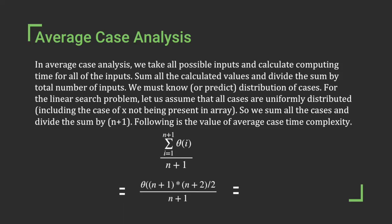Let us assume that all cases are uniformly distributed, including the case of x not being present in the array. So we sum all the cases and divide the sum by n+1. As we drop all constant values and the complexity depends only on the highest power of n, the answer would be O(n).